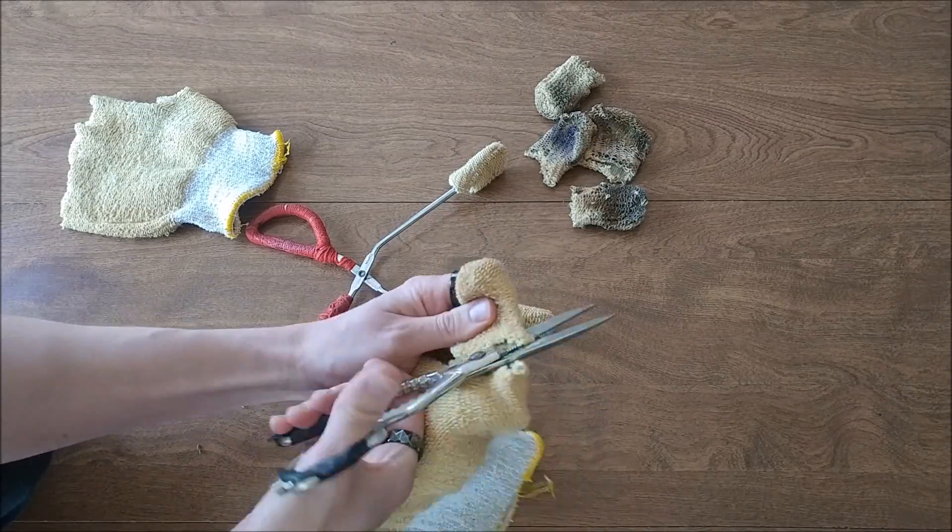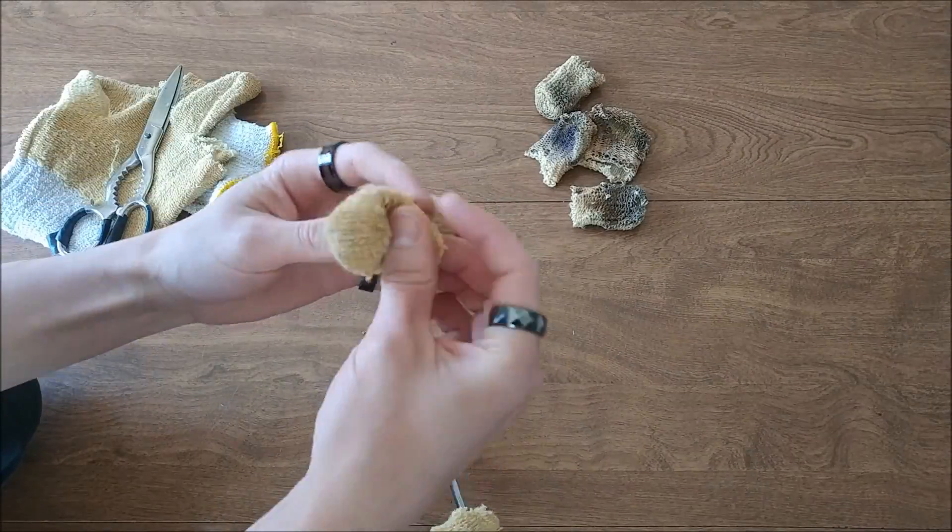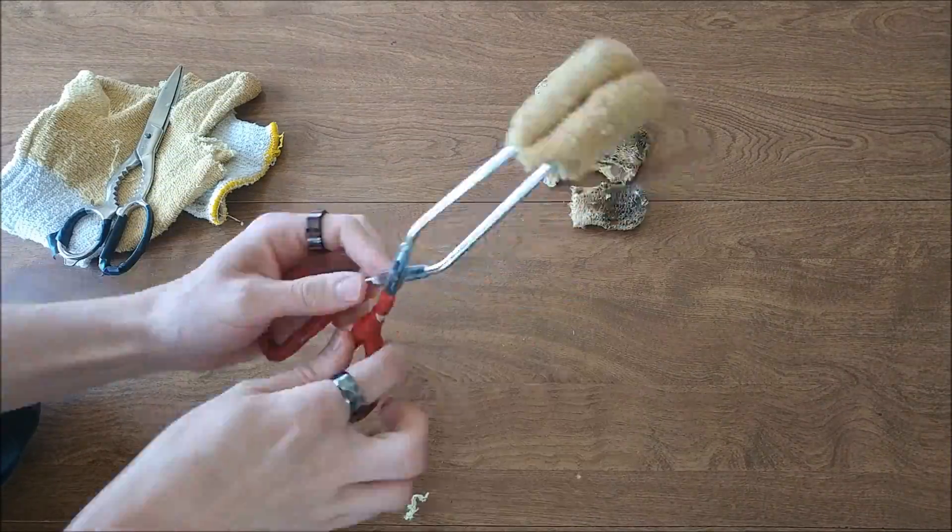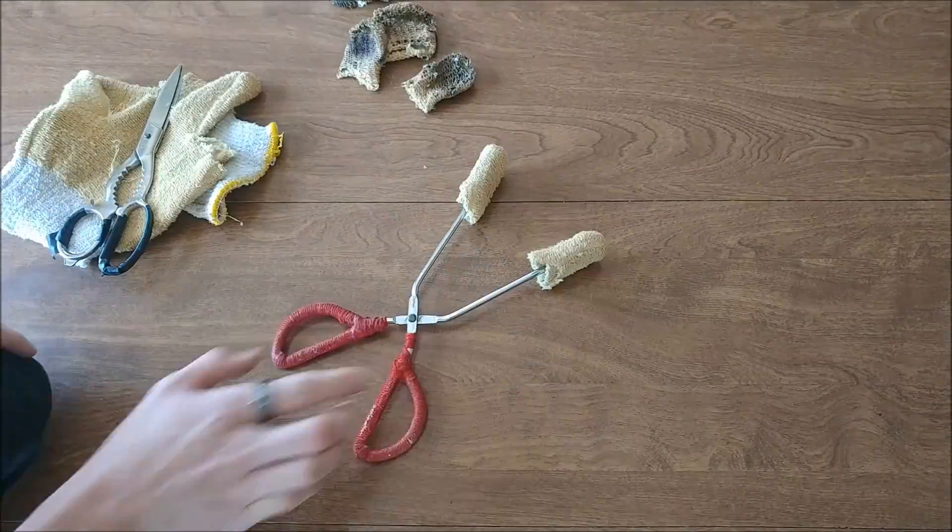Hello everybody, this video is on making your own scratch-free tongs for glass. Regular kitchen tongs can be great for picking up glass, but scratches or metallic streaking can be a drawback.